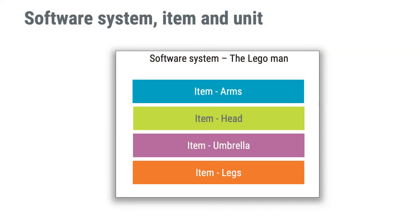Hopefully you start seeing a meaning in breaking down a software system into items. Let's make it more hands-on and run an exercise with the Lego man. After my thorough initial architecture design, I've decided to divide Mr. Lego into four software items: arms, head, umbrella, and leg. Even though there is no definition of what may or may not be an item, every item must be identifiable, both in your source code and throughout your documentation.